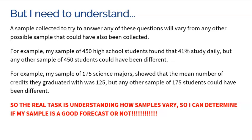The second example could be my sample of 175 science majors in college found that the mean number of credits they graduated with was 125. But again, any other sample of 175 students could have been different. Could have been 126, could have been 124, could have been 130. Who knows? But I have to understand that my sample is my sample and it's definitely going to vary from other samples of the same size.